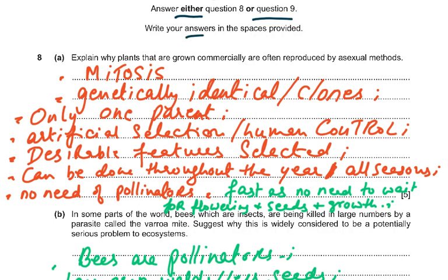To word your answers for Question 8a: offspring produced by mitosis are genetically identical clones from one parent; artificial selection is under human control; desirable features such as height or crop yield are selected; it can be done in all seasons without pollinators; it is fast because you do not need to wait for flowering, seed formation, seed collection, and germination — but always give the reason why it is fast.